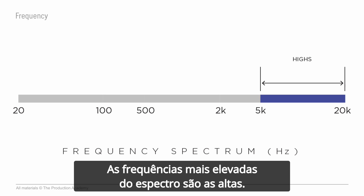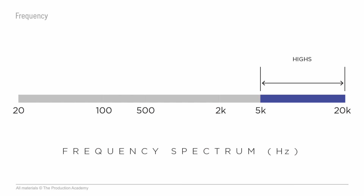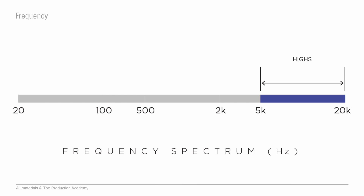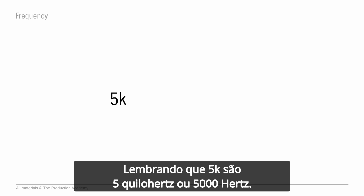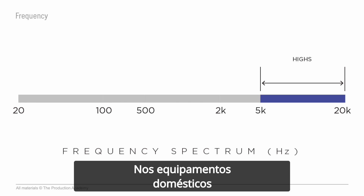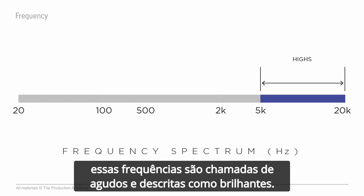At the top of the frequency spectrum are the highs. These range from 5k to 20k. Remember, 5k is 5 kilohertz, which is 5000 hertz. In consumer electronics, the high frequencies are called treble, and they are described as bright.